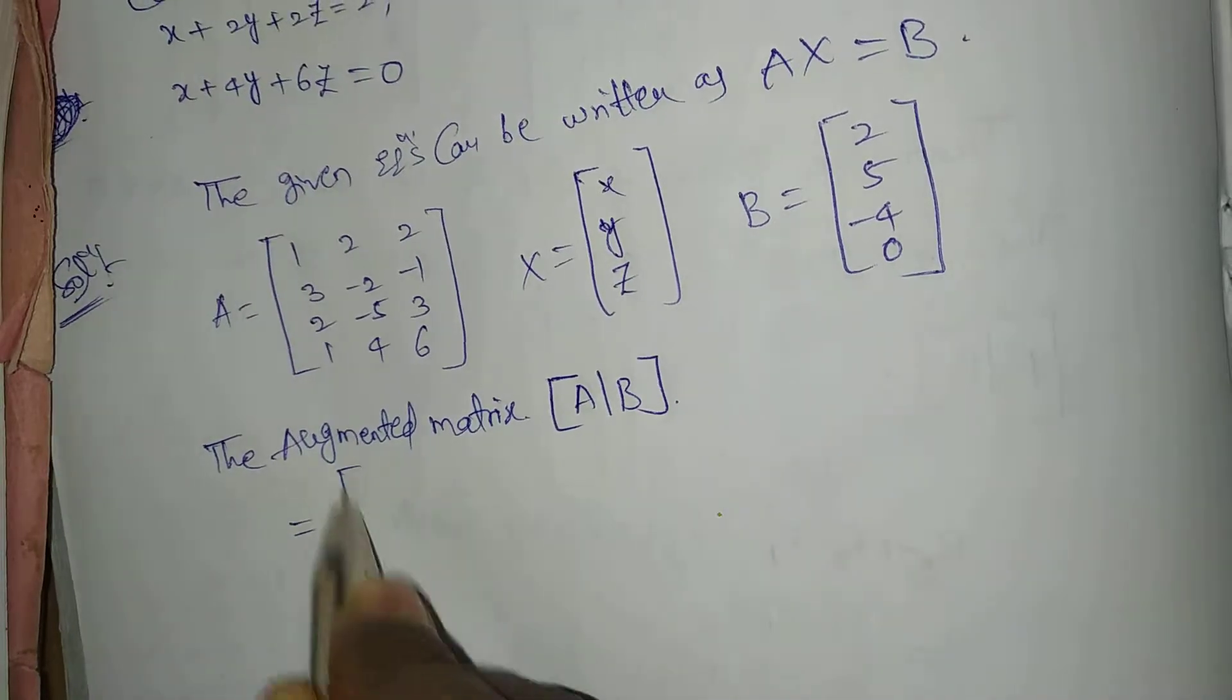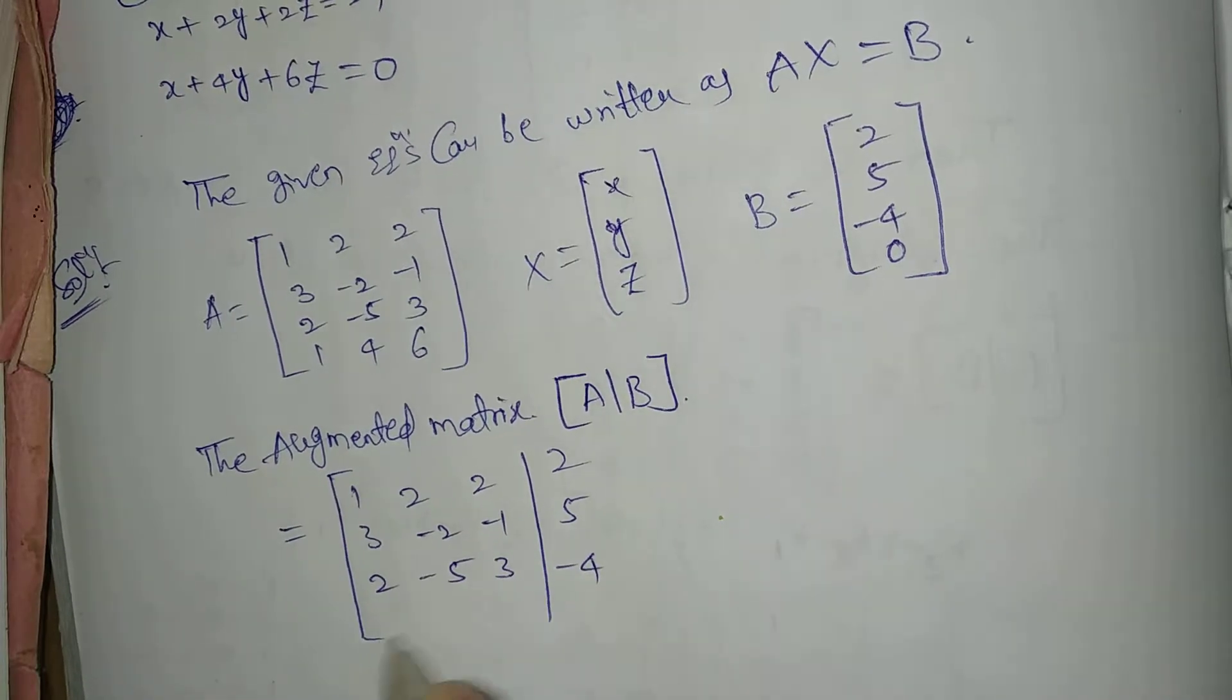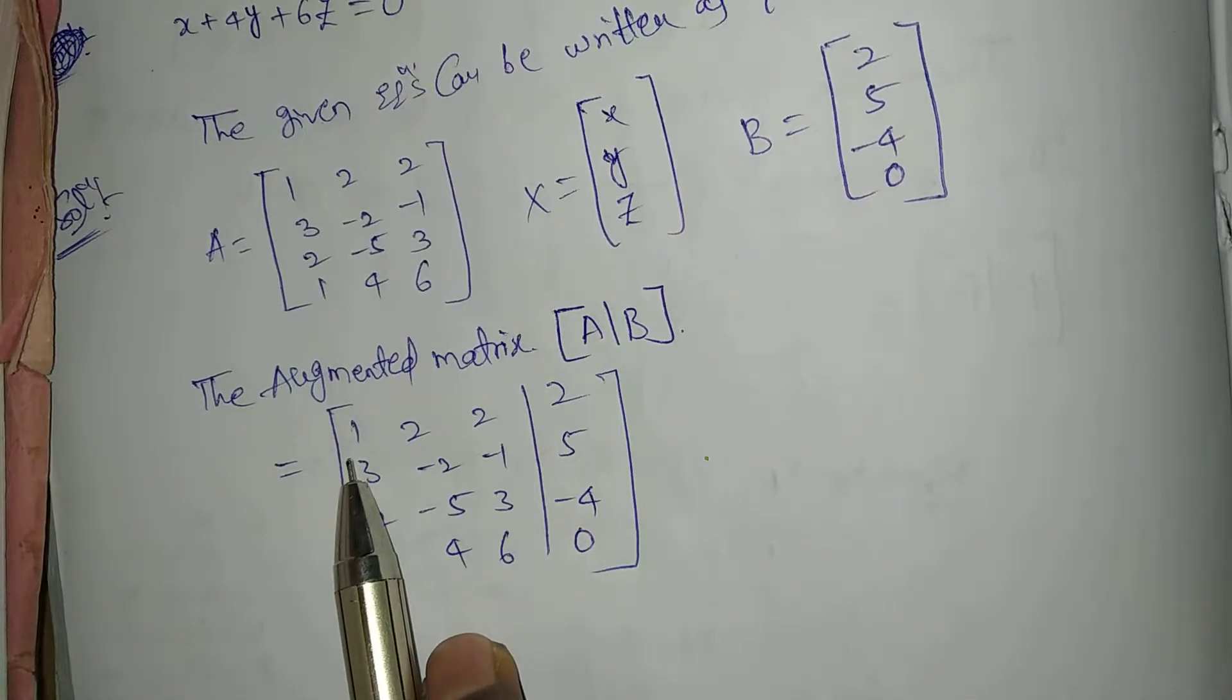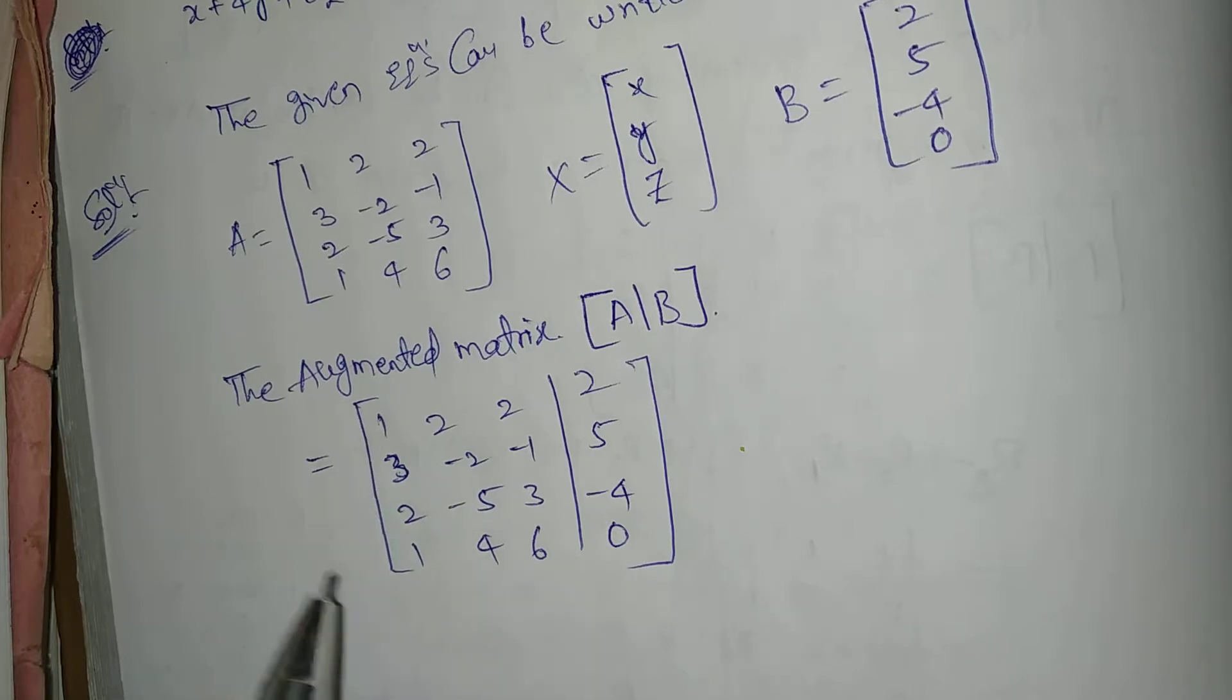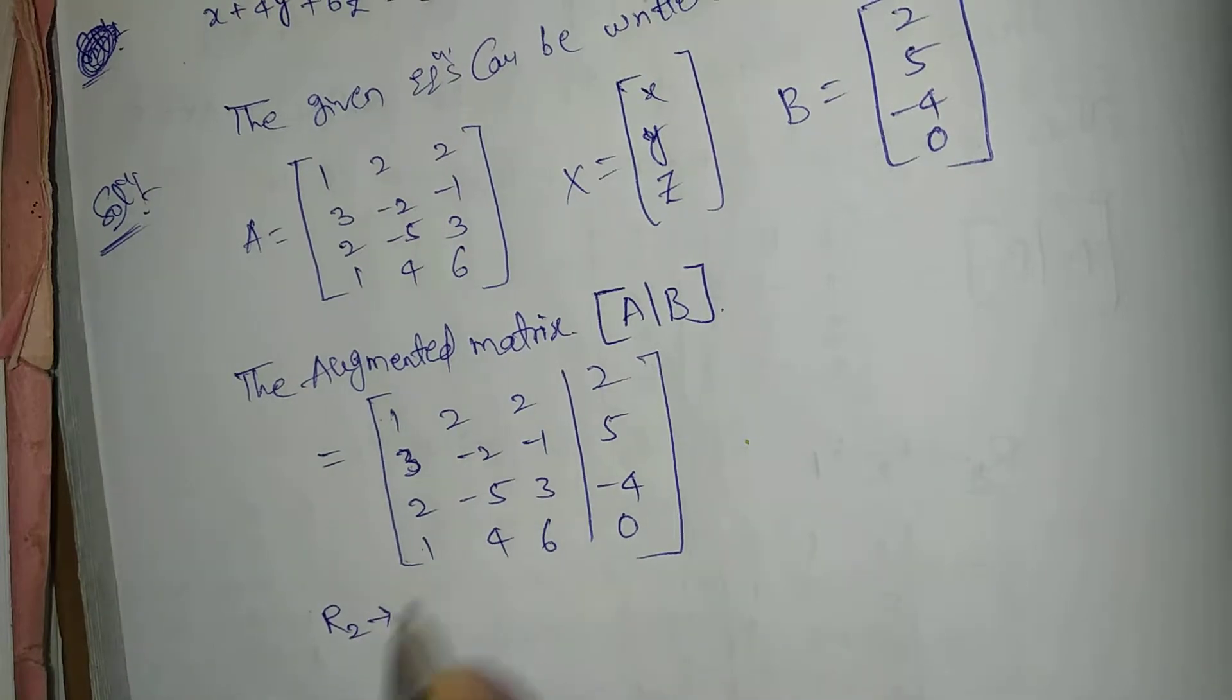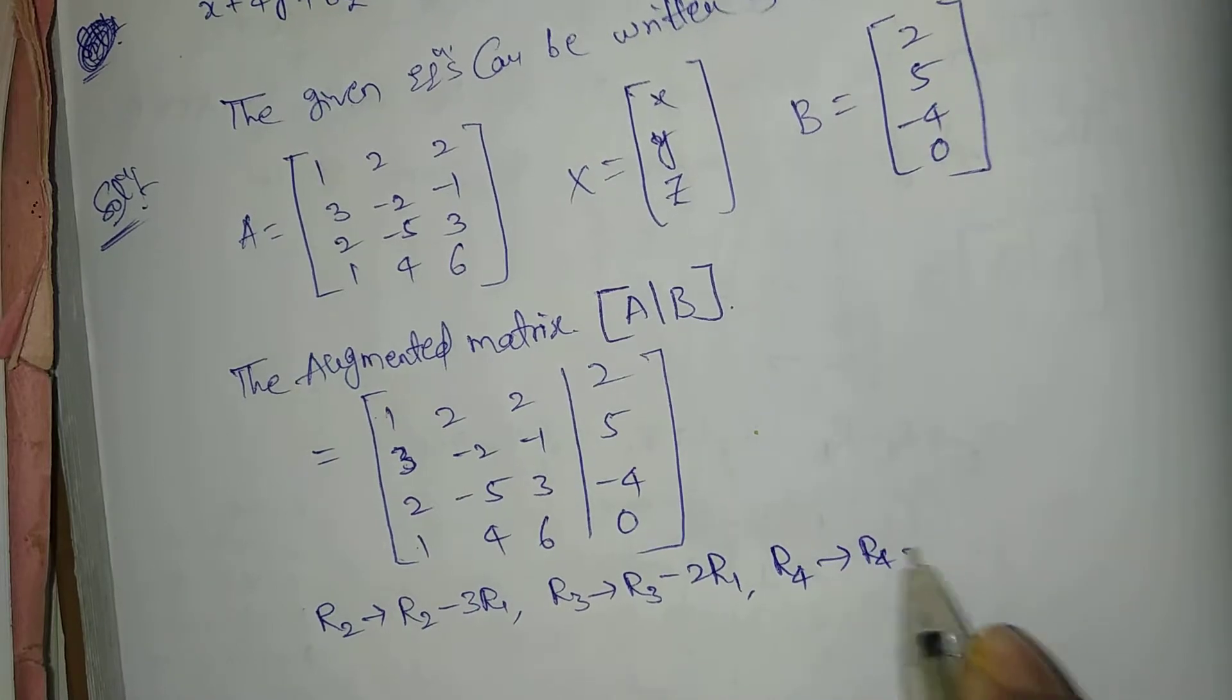The augmented matrix A given B equals 1, 2, 2, 2; 3, minus 2, minus 1, 5; 2, minus 5, 3, minus 4; 1, 4, 6, 0. Now perform row operations. R2 tends to R2 minus 3 R1. R3 tends to R3 minus 2 R1. R4 tends to R4 minus R1.